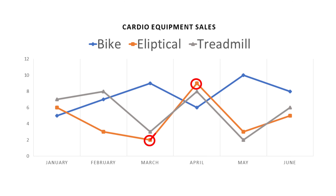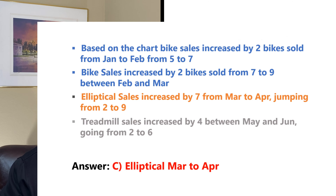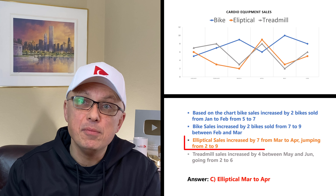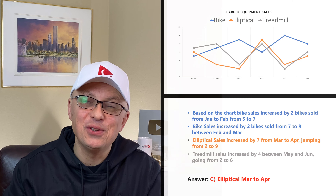Elliptical sales increased by seven from March to April, jumping from two to nine. Treadmill sales increased by four between May and June, going up from two to six. So the correct answer is choice C — elliptical sales from March to April — because the jump was by seven, from two to nine. Hopefully you've nailed this question.